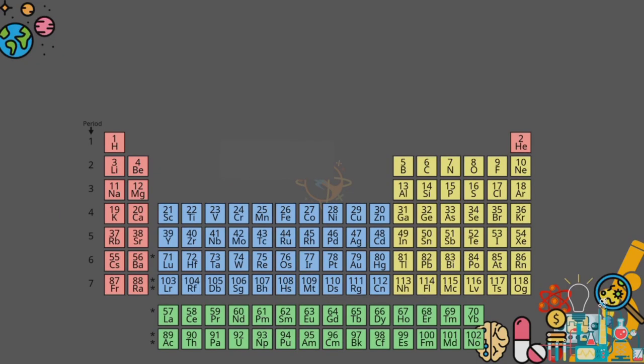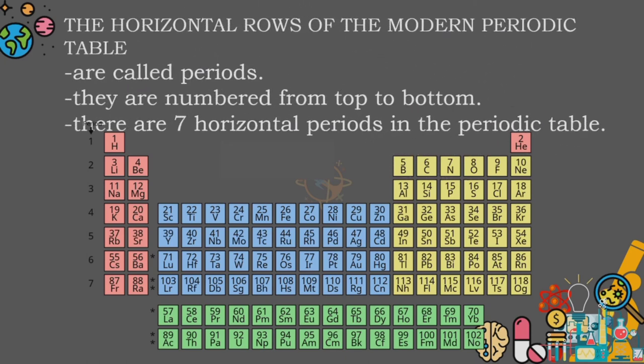The horizontal rows of the modern periodic table are called periods. They are numbered from top to bottom. There are seven horizontal periods in the periodic table.